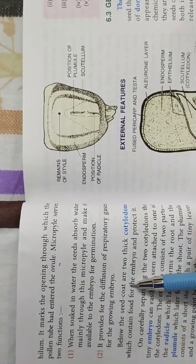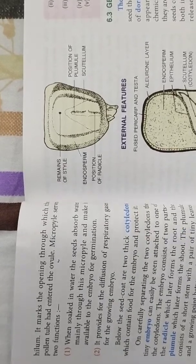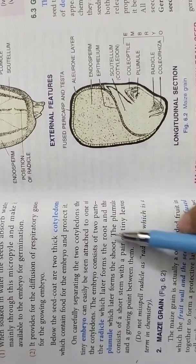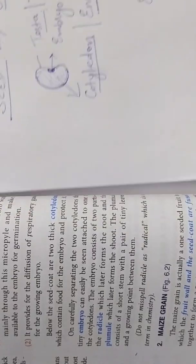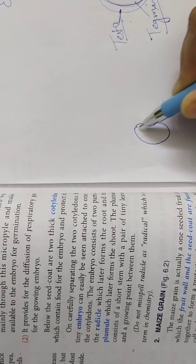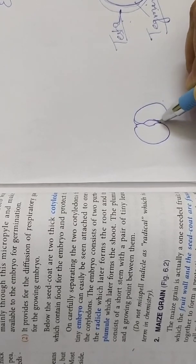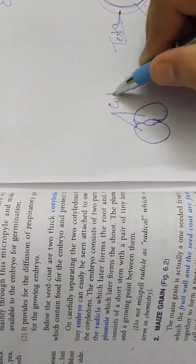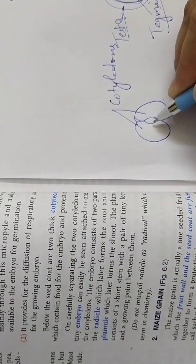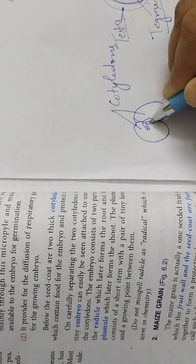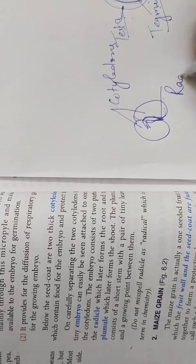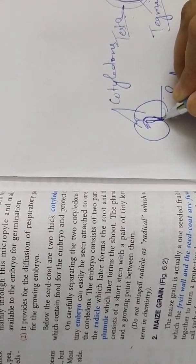Now if we open the seed coat, remove the seed coat, we will find that bean seed has two cotyledons. On carefully separating the two cotyledons you can easily locate the embryo. Means on removing the seed coat after soaking the seeds, you can remove them and you will be able to locate the two cotyledons. And here you will be able to locate the plumule and this is the radicle. The radicle which is going to form future root. Remember the embryo, this is the embryo. The embryo has two parts. Radicle.